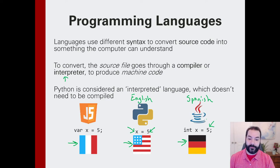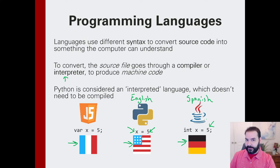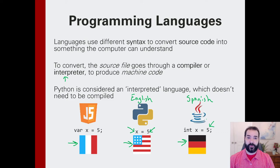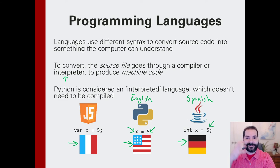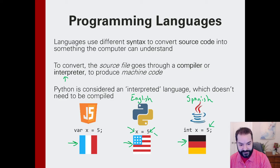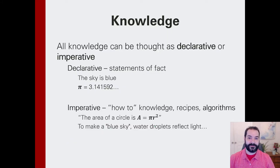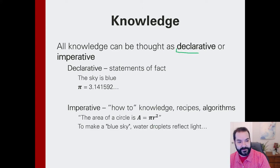It's all through our programming language. We're effectively learning one language to do this task — you could do it in Java, JavaScript, Haskell, or even Piet, where you draw pictures and that is a programming language. This gets us into different kinds of knowledge: declarative knowledge and imperative knowledge.